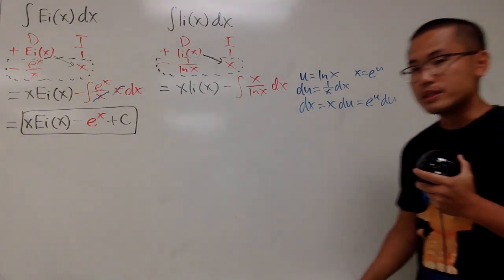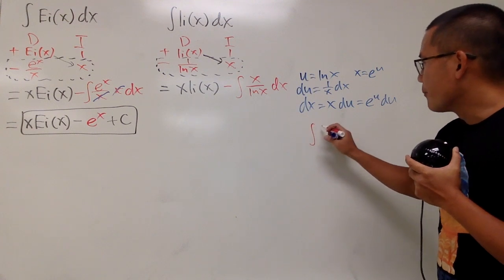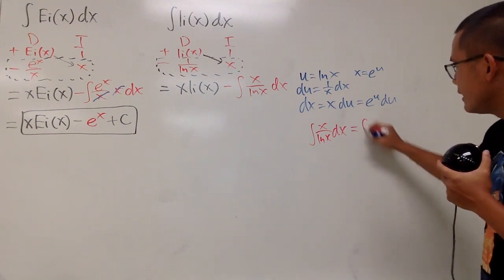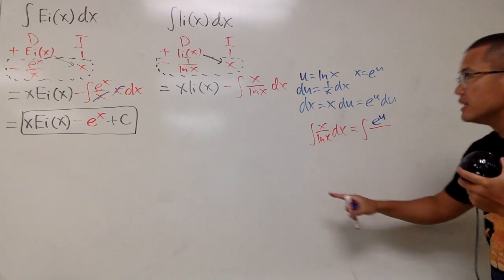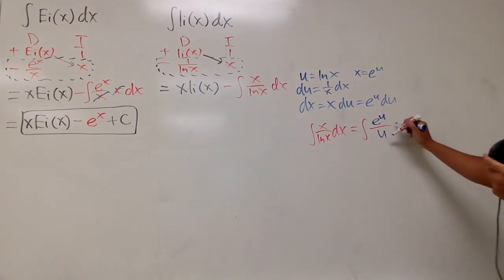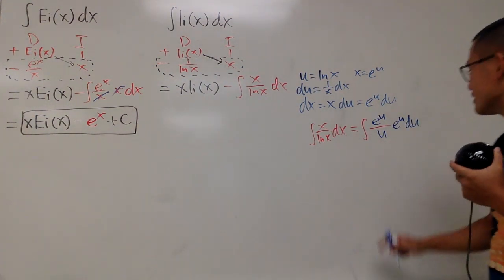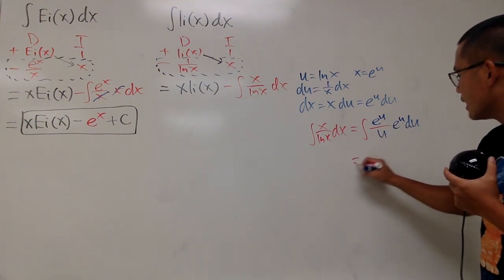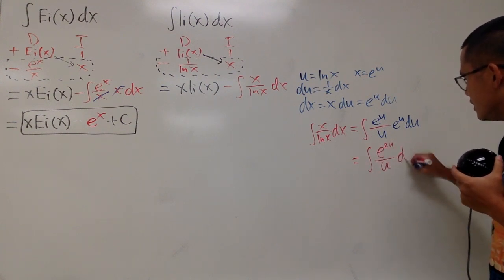And we will see, let's just do this integral right here real quick. The integral of x over ln(x) dx. This is going to be the integral, x is e^u over ln is u, and dx is e^u du. Nothing cancels out yet, but it's okay, because check this out. e^u times e^u is just e^(2u), you add the exponents. So we get the integral of e^(2u)/u du.